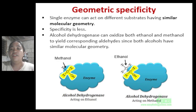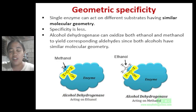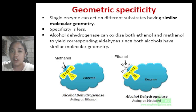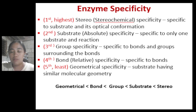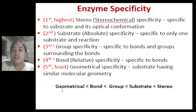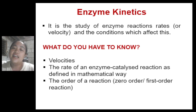The last level is geometrical specificity, where a single enzyme can act on different substrates having similar molecular geometry. It is the least specific level of enzyme specificity. An example is alcohol dehydrogenase, which can oxidize both ethanol and methanol to yield corresponding aldehydes because both alcohols have similar molecular geometry. In summary, the highest level of specificity is stereo or optical, followed by substrate or absolute, then group, then bond or relative, and the least specific is geometrical specificity.